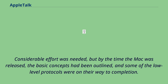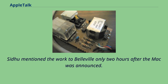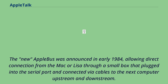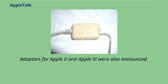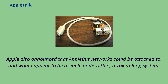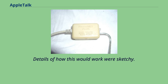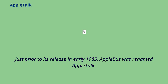C2 mentioned the work to Belleville only two hours after the Mac was announced. The new Apple Bus was announced in early 1984, allowing direct connection from the Mac or Lisa through a small box that plugged into the serial port and connected via cables to the next computer upstream and downstream. Adapters for Apple II and Apple III were also announced. Just prior to its release in early 1985, Apple Bus was renamed AppleTalk.